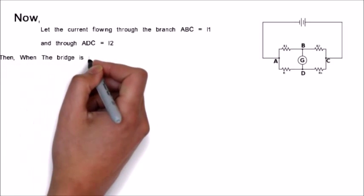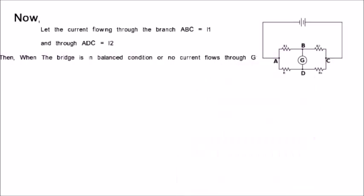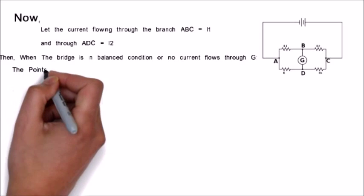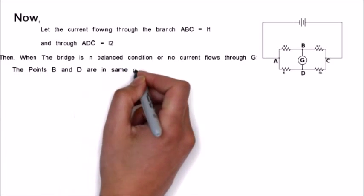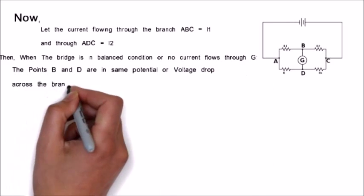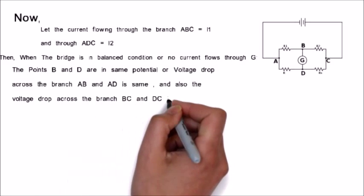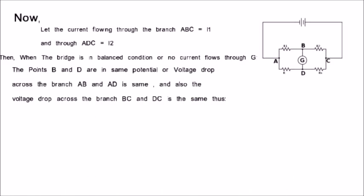Then, when the bridge is in balanced condition or no current flows through G, the points B and D are in same potential or voltage drop across the branch AB and AD is same, and also the voltage drop across the branch BC and DC is the same.